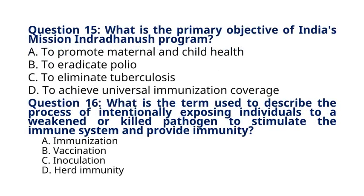Question 15. What is the primary objective of India's Mission Indradhanush program? A. To promote maternal and child health. B. To eradicate polio. C. To eliminate tuberculosis. D. To achieve universal immunization coverage. The correct answer to question 15 is option D, to achieve universal immunization coverage. Mission Indradhanush is a program launched in India with the objective of achieving universal immunization coverage by reaching unvaccinated or partially vaccinated children and pregnant women in remote and underserved areas.